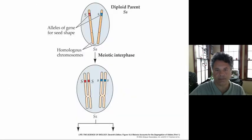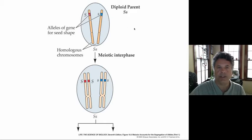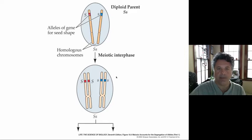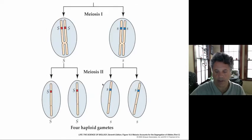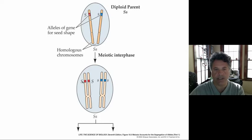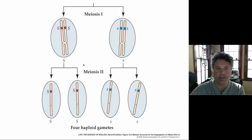Now let's look at meiosis, examining a single gene with two alleles present on a pair of homologous chromosomes. This is a big S, little s heterozygote diploid. We have replication during the S phase of the cell cycle prior to the first meiotic division, so we have two sister chromatids bearing little s and two sister chromatids bearing big S. In the first meiotic division, we have separation of the homologous chromosomes: one product of meiosis I has the two sister chromatids bearing big S, and the other has two sister chromatids bearing little s.